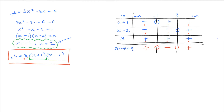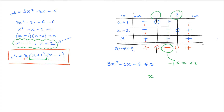This sign table allows us to state that this function is positive for x less than negative 1 or x greater than 2, and negative for x between negative 1 and 2. It also shows the function equals zero at negative 1 and 2. For instance, to solve 3x squared minus 3x minus 6 less than or equal to zero, we look at the table and see that the solution is all x values greater than or equal to negative 1 and less than or equal to 2.